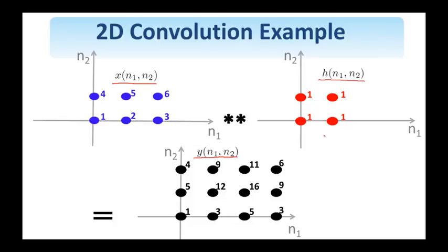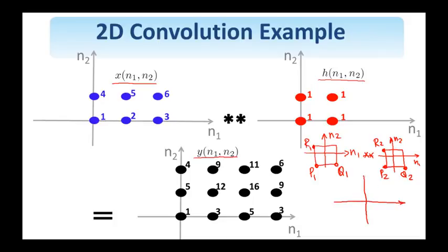One can show in general that if I have a signal that has support as shown here and determined by these points, P1, Q1, R1, and this signal is convolved with another signal that has support determined by P2, Q2, R2, then the resulting signal from this 2D convolution will have support as shown here, determined by P1 plus P2, Q1 plus Q2, and R1 plus R2.